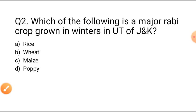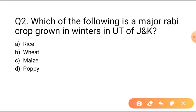Question number two: Which of the following is a major Rabi crop grown in winters in UT of Jammu and Kashmir? Option A: Rice. Option B: Wheat. Option C: Maize. Option D: Poppy. Wheat is a major Rabi crop grown in winters in UT of Jammu and Kashmir, so Option B is the correct answer.